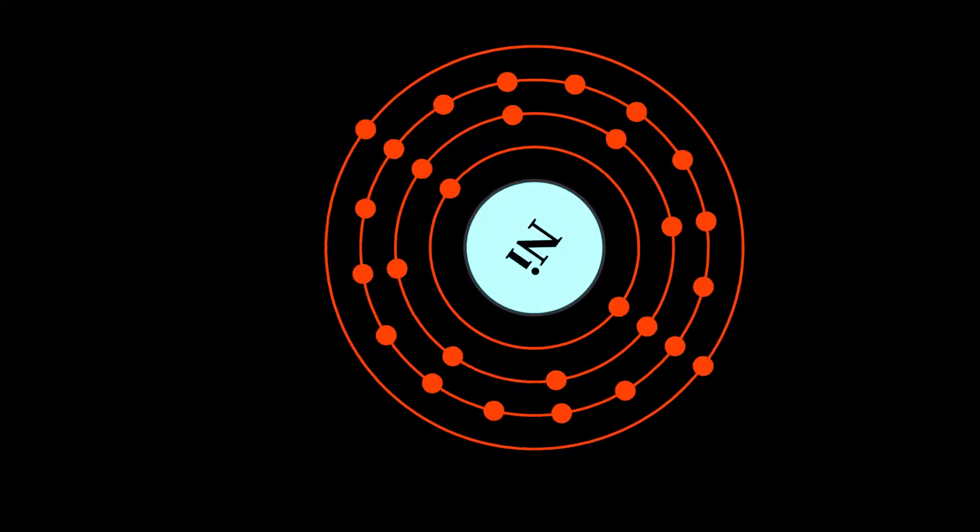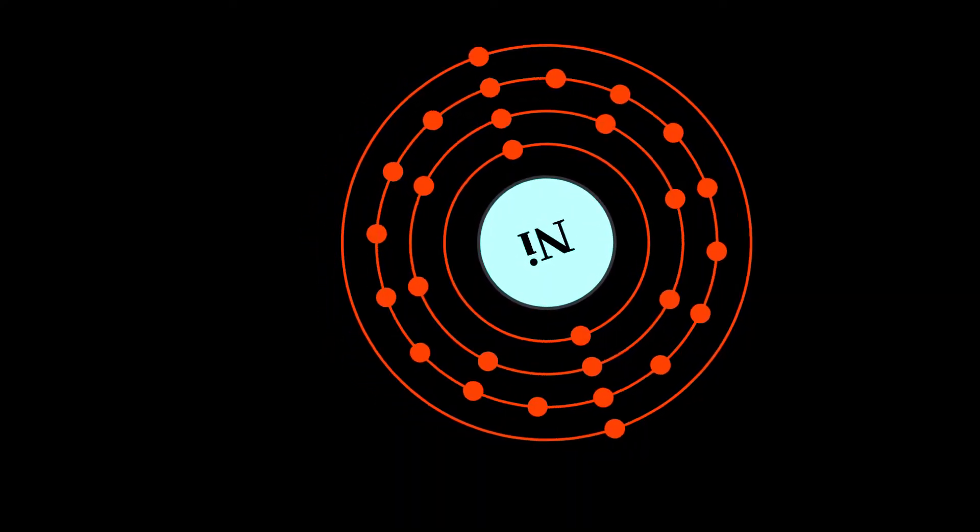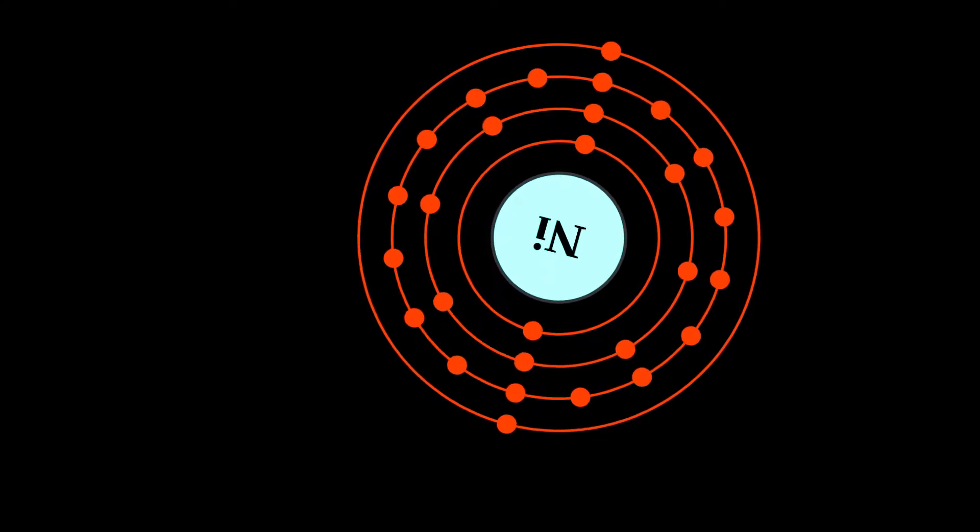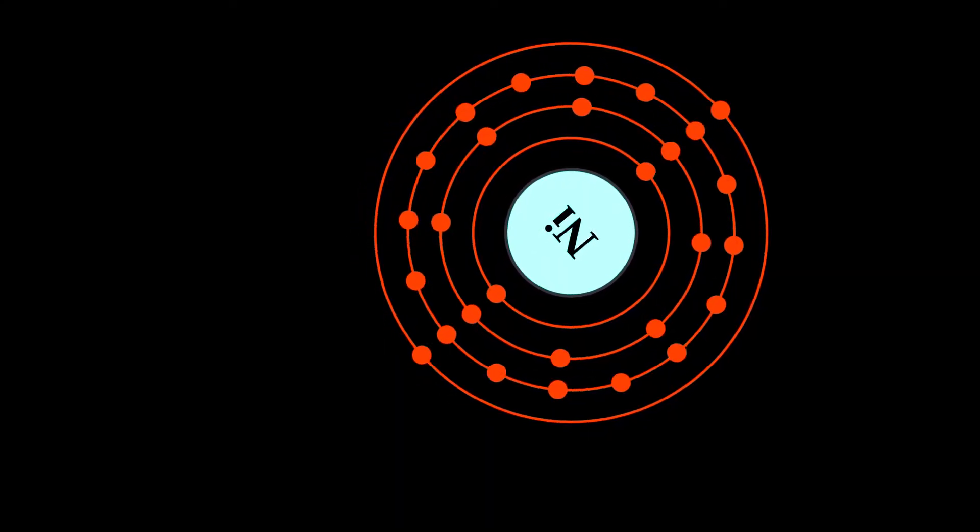It is a silvery white lustrous metal with a slight golden tinge. Nickel belongs to the transition metals and is hard and ductile.